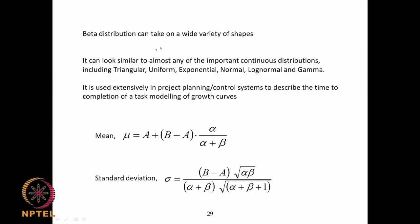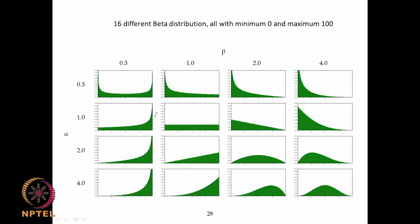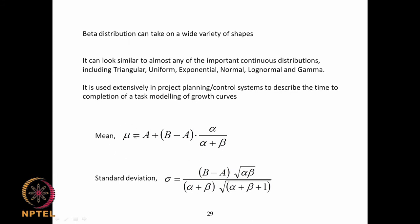The beta distribution can take a wide variety of shapes — triangular, uniform, exponential, normal, log-normal, or gamma. It is used extensively in project planning and controls, and for modeling growth curves in bacterial systems. The mean is given by A + (B−A)α/(α+β). For the standard beta (A=0, B=1), this simplifies to α/(α+β). The standard deviation is the square root of αβ/((α+β)²(α+β+1)).